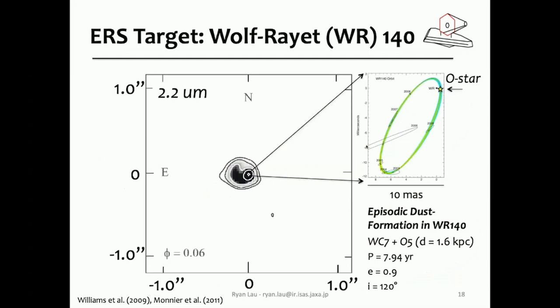Our target is WR 140. We have one target, and this is the ideal target for James Webb based on the spatial resolution and also the sensitivity. This system is a little different from the pinwheel system — actually a lot more eccentric. The eccentricity is about 0.9 and it has an orbital period of about eight years. So instead of forming dust continuously, this system actually forms dust episodically. Every time the Wolf-Rayet star and the O star companion go through periastron passage — the point of closest approach — it undergoes a dust formation episode.